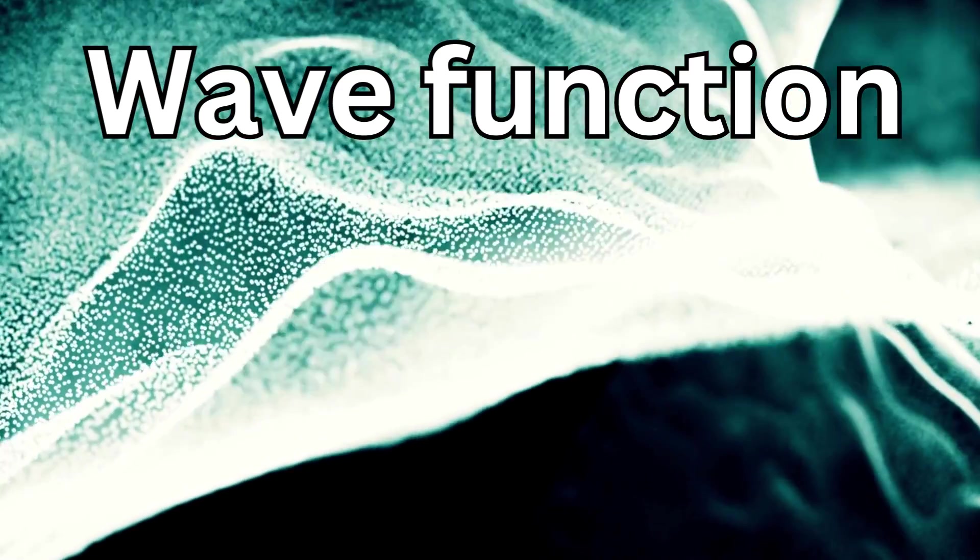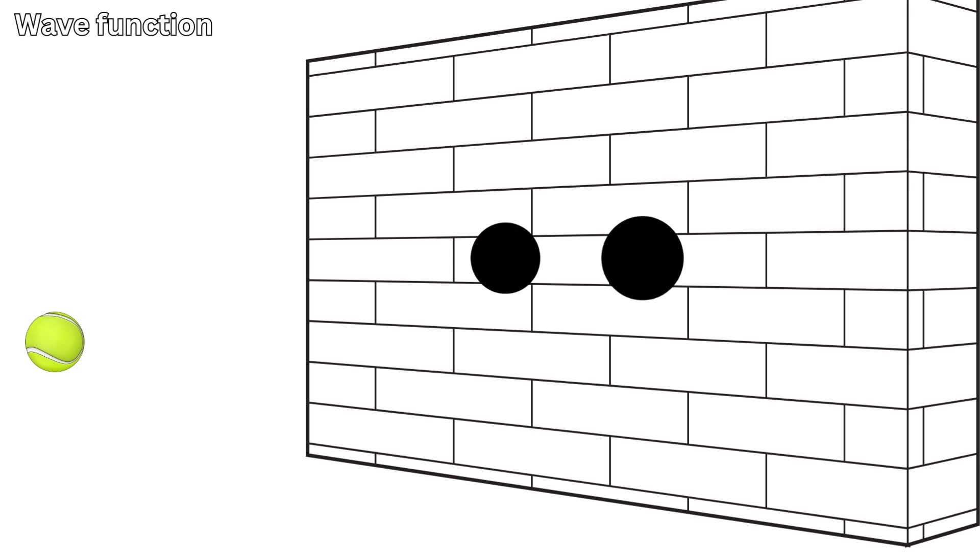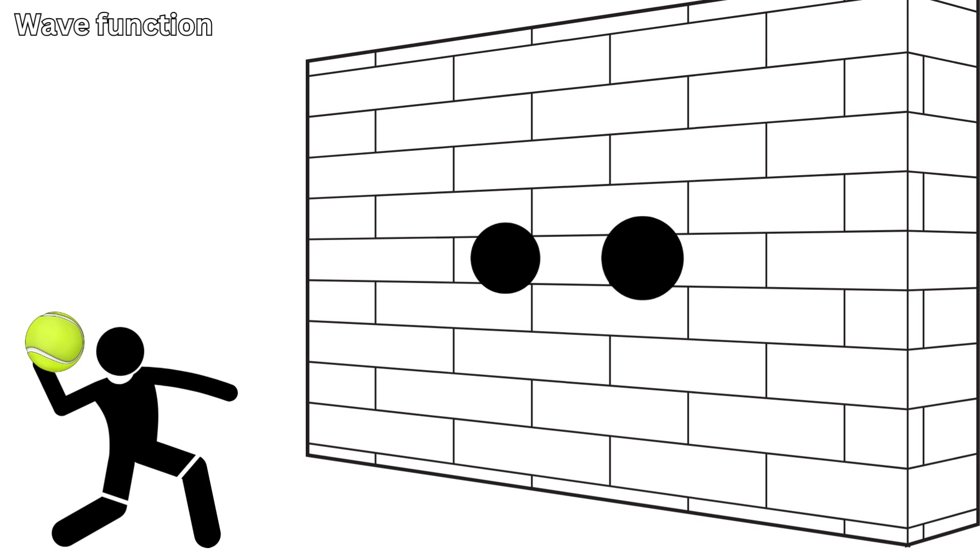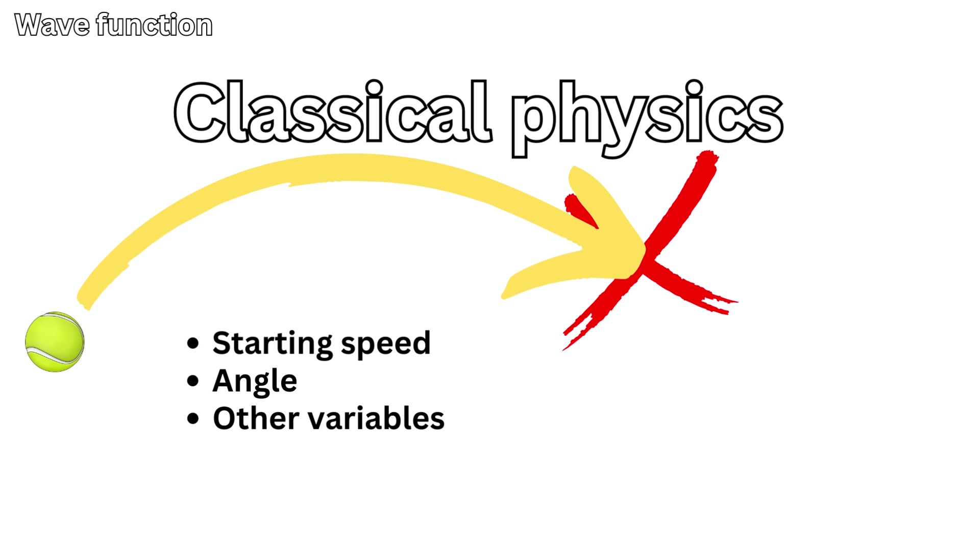What is meant by wave function? Well, think about throwing a small ball at a wall that has two small holes in it. Before we throw the ball we have no idea where it will hit or land exactly. It might pass through one of the two holes, or it might strike the wall and deflect away. However, in classical physics, you can anticipate a ball's trajectory and landing spot based on its starting speed, angle, and other variables when you throw it.